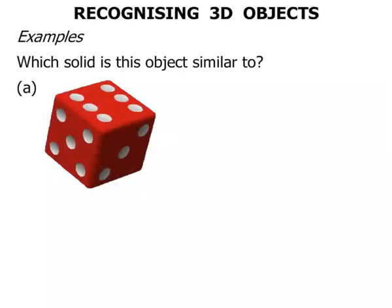The first one we've got is a single die. Notice I said the word die. I didn't say dice. Dice is if we've got two or more. But because we've only got one, the correct name is die.